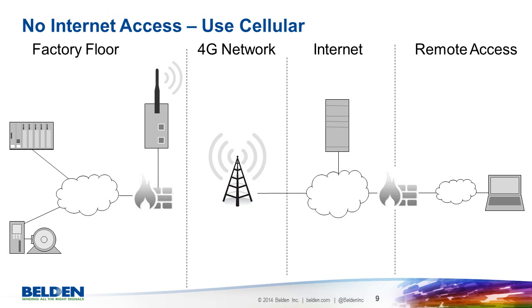In the third scenario, no internet access is available at all, so internet access is provided by a 3G or 4G cellular modem. Many standalone routers, including the Hirschman Owl family, allow an internet connection to be established by sending an SMS message to the router. In any case, the internet connection should only be established when remote access is required.